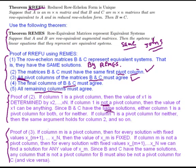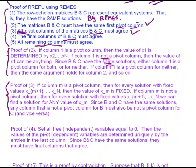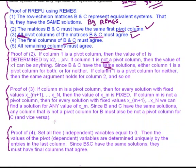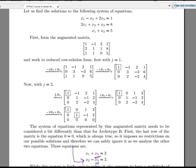Let's look at step 4. If we set all independent free variables equal to 0, then the values of the pivot variables are determined uniquely by the entries in the last column. Go back to our simple example: we have two dependent variables, x1 and x2, and we have a free variable, x3. Suppose I set x3 equal to 0 - then x2 must be equal to 2 and x1 must be equal to 3. We can see that in the system of equations as well. So the values of the pivot variables - in other words, the dependent variables - are uniquely determined by the values in the last column.